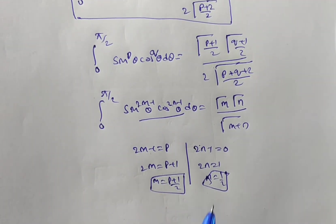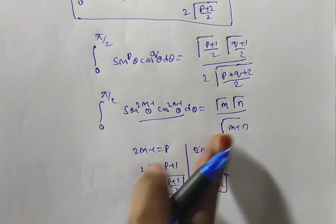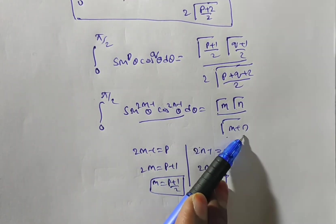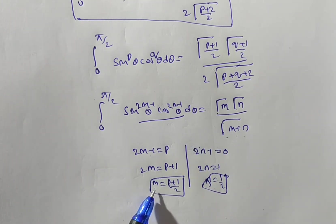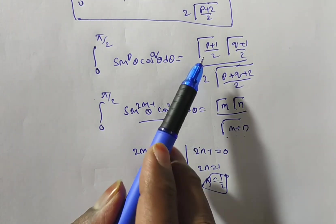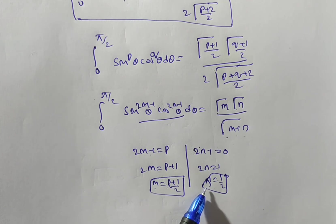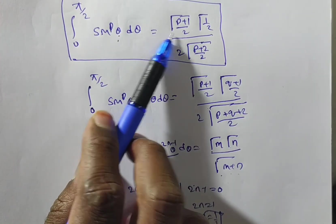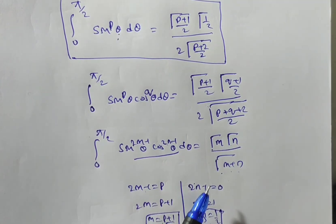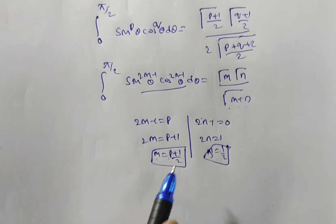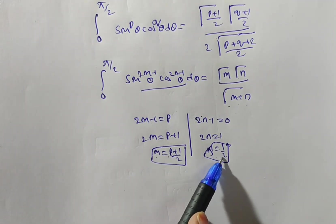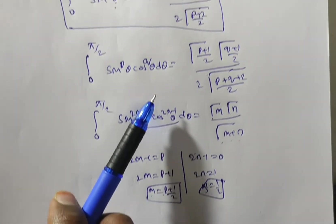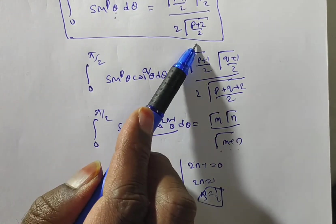Substituting these m and n values in the beta-gamma relation γ(m)·γ(n)/γ(m+n), we get γ((p+1)/2) · γ(1/2) in the numerator. For the denominator, m+n = (p+1)/2 + 1/2 = (p+2)/2, giving γ((p+2)/2).